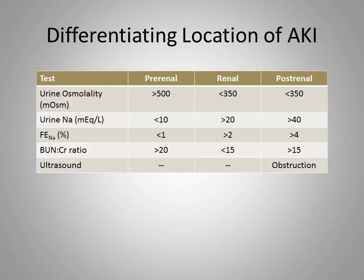Urea is also retained preferentially, elevating its ratio to creatinine in the blood. With intrinsic renal AKI, these renal responses are compromised. The kidney is unable to handle filtered salt and water, which pass on into the urine, resulting in a low urine osmolality and relatively high sodium excretion.